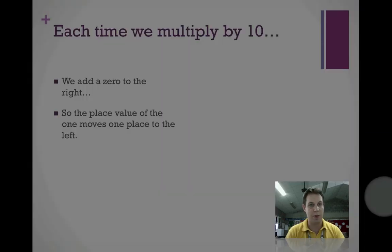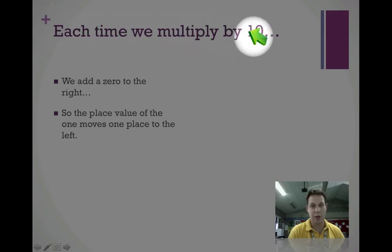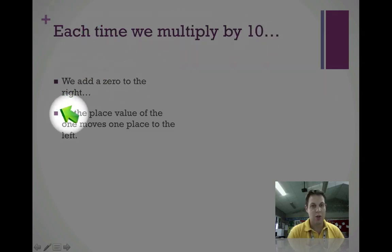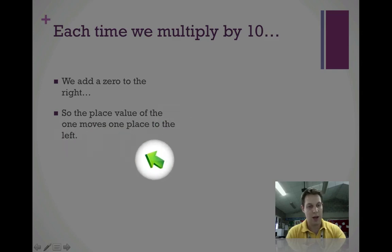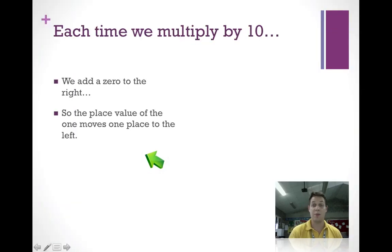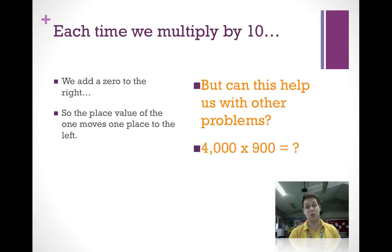Two important things to remember: each time we multiply by 10, we add a zero to the right, and the place value of the one moves one place value to the left. Can this information help us with other problems? For example, like 4,000 times 900 — yes, it can.